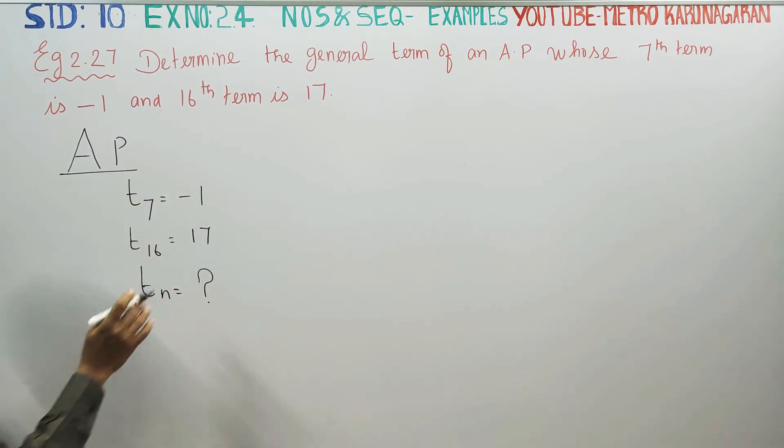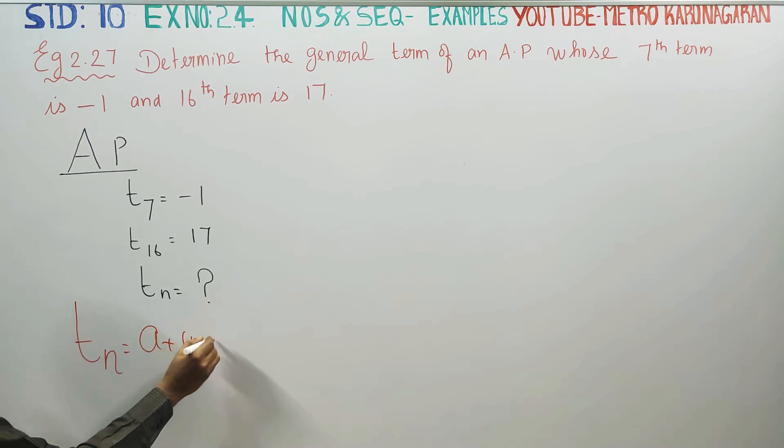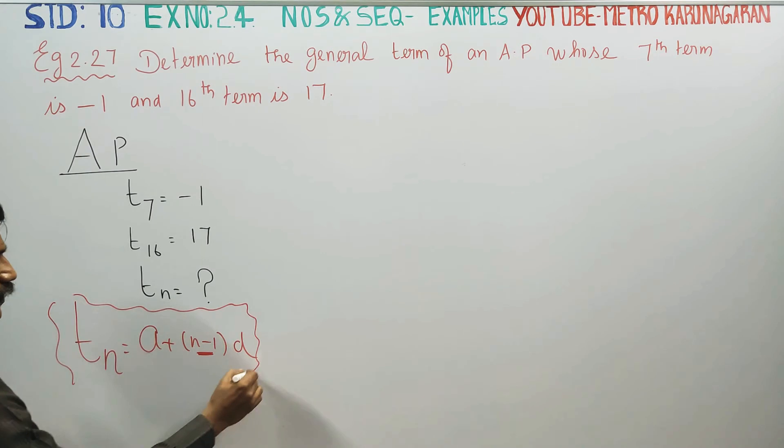General term is A plus N minus 1 into D. TN is equal to A plus N minus 1 into D. This is the general term formula. We will start with the 16th term.